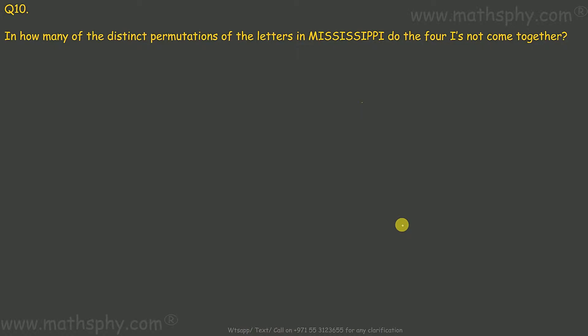Now this one here it says, in how many of the distinct permutations of the letters in MISSISSIPPI do the four I's not come together? Now, if I arrange this word Mississippi, in many arrangements you will find these four I's are coming together. But this question is asking, these I's should not come together.